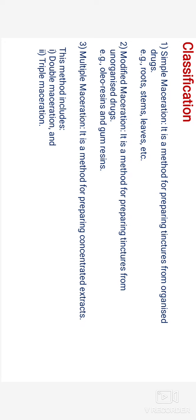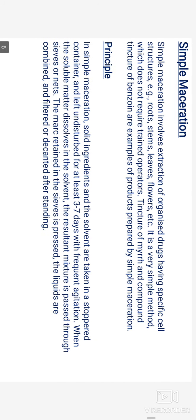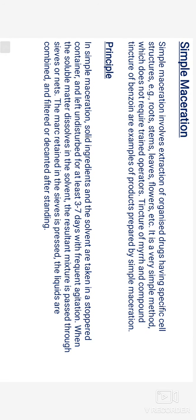In simple maceration, it is a method for preparing tinctures from organized drugs — example: roots, stems, and leaves. Modified maceration is a method for preparing tinctures from unorganized drugs — example: oleoresins and gum resins. Multiple maceration is a method for preparing concentrated extracts, including double maceration and triple maceration. Simple maceration involves extraction of organized drugs having specific cell structures such as roots, stems, leaves, and flowers. It is a very simple method which does not require trained operators.